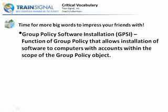Software is deployed to computers with accounts within the scope of the group policy object. What do we mean by within the scope? We're talking about what user or computer accounts are affected by the group policy, depending upon where it's linked. We linked our group policy object at the NY computers level, and it filtered down through inheritance to all of our other machines in our network.